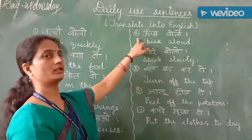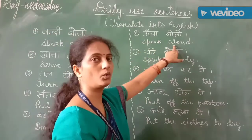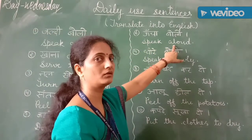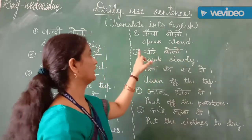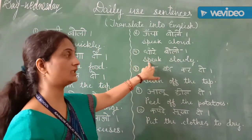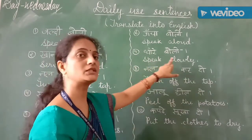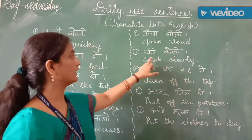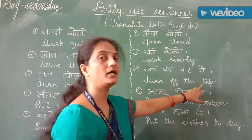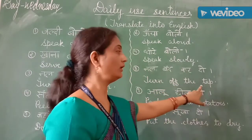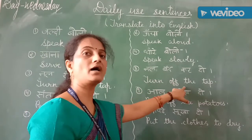Look at the board, class. Next sentence is: speak aloud. Read again: speak aloud. Next sentence is: speak slowly. Speak slowly. Next sentence is: turn off the tap. Okay? Read again: turn off the tap.